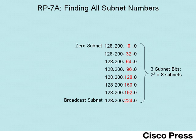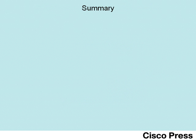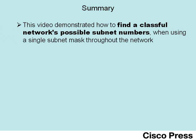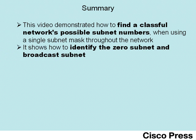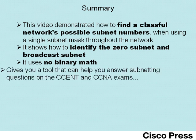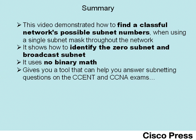In this particular example, there are eight subnet numbers listed. It's a good reminder to think about how many subnets are listed — as we said earlier, there are three subnet bits, so we should expect to see two to the third subnets. In summary, this video shows how to find a classful network's subnet numbers assuming the same mask is used throughout the network. The process identifies the zero subnet and broadcast subnet and uses no binary math, making it a great tool for CCNA and CCENT exam subnetting questions — you'll go more quickly and find answers with much more confidence.